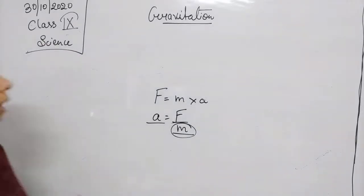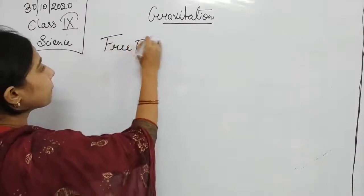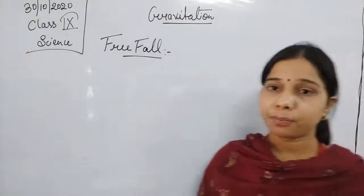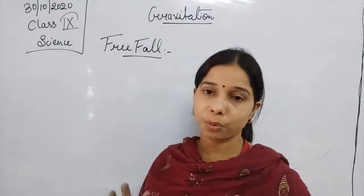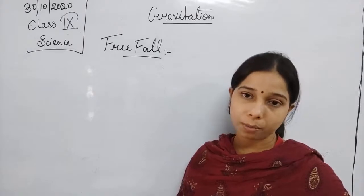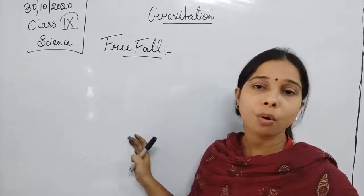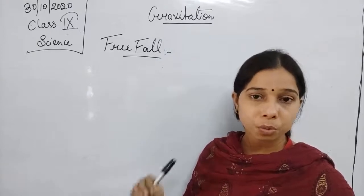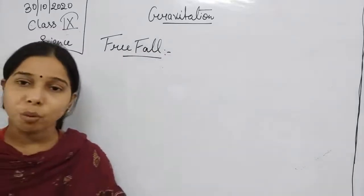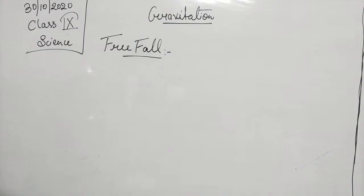The next topic we are discussing is free fall. What is free fall? If we throw anything upward it will start coming downward, or if you drop a ball from a height it starts coming downward — that is the falling of the object. If only the gravitational force is acting on a falling object coming towards the earth, that kind of fall is known as free fall. It means it is free from any other force acting on it.